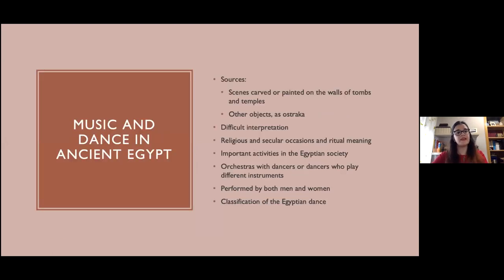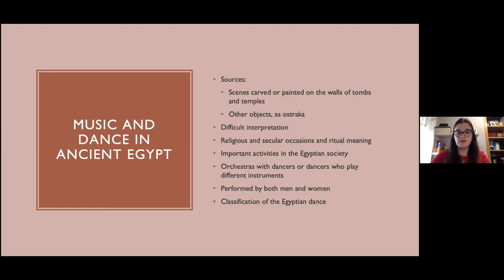To study music and dance in ancient Egypt, we shall study the inscriptions and overall the scenes represented in some tombs and temples. They are images that represent something else beyond the instrument or the gestures, as they have a hidden or symbolic meaning. This meaning could be ritual in many cases, but we have to study it related to the whole scene in which the musicians or dancers are represented, though this doesn't guarantee a correct or complete interpretation. Both activities took place during religious and secular occasions, such as religious festivals, funerary processions, or military scenes.